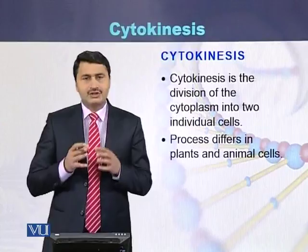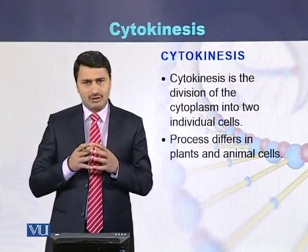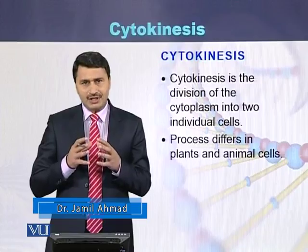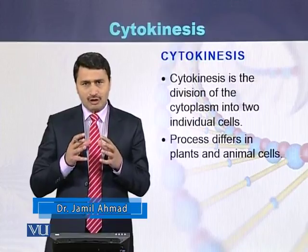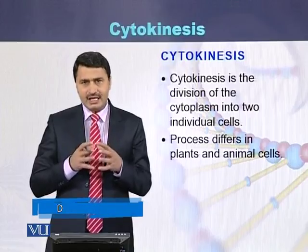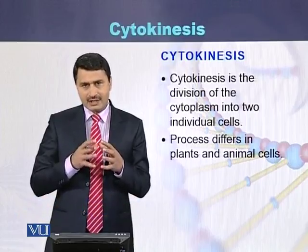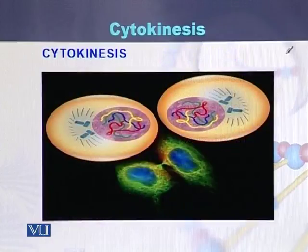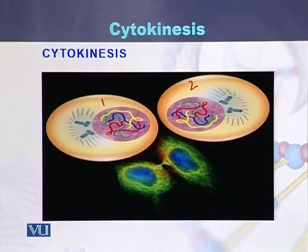Cytokinesis is a process by which the cytoplasm is divided into two daughter cells. This process differs in plant cells as compared to animal cells. As we can see in this diagram, one cell has been converted into two cells — cell number one and cell number two.